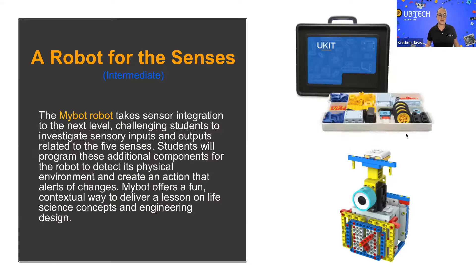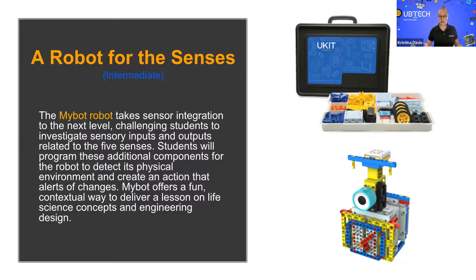Next we're moving up to the intermediate kit. This one hits NGSS standards third grade through eighth grade, so you'll see a wide range here. We're going to focus on the unit 'A Robot for the Senses,' which uses the MyBot — you can see it there, very similar to an alarm clock, that's what it's meant to look like. This unit focuses all on sensory, inputs, outputs, and the five senses.